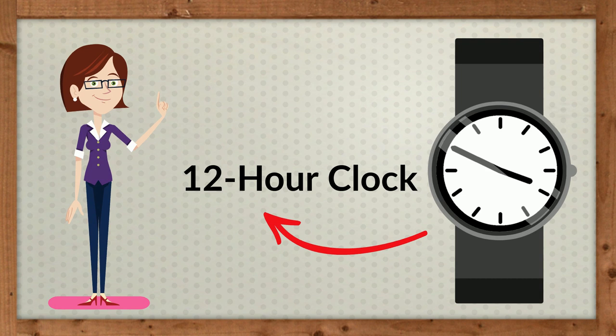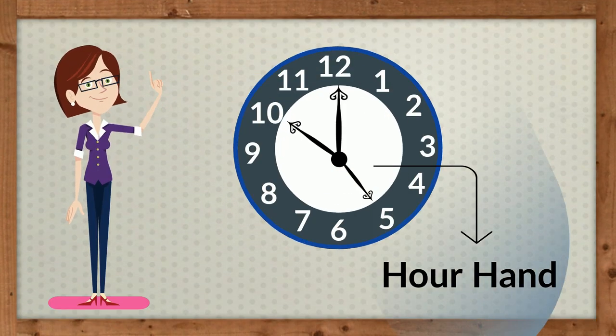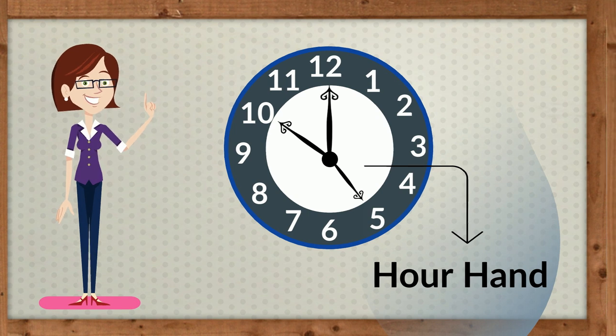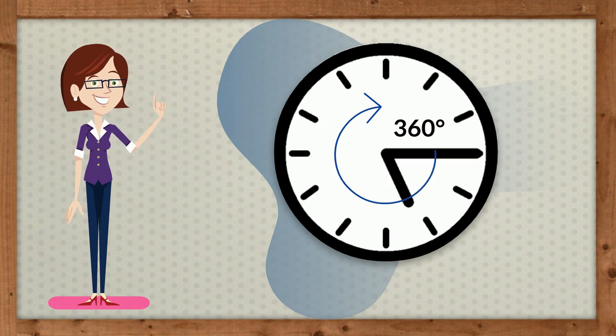The hour hand, the shorter of the two hands, completes one rotation 360 degrees in 12 hours in a normal 12 hour analog.